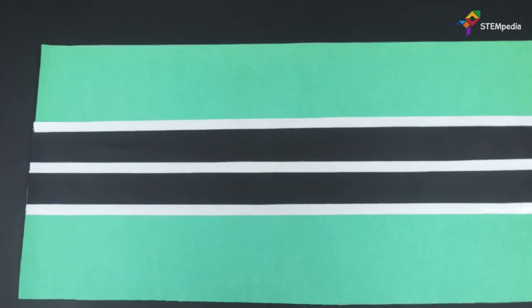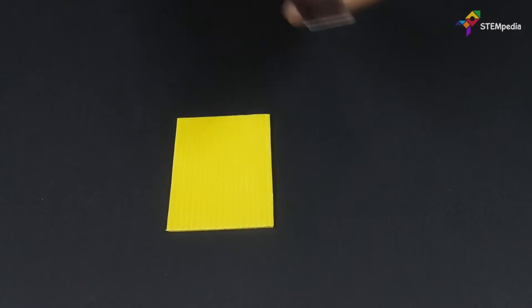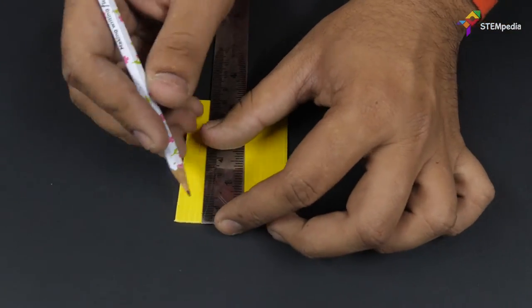Now, let's begin with the assembly of the toll booth. We will use two small pieces of size 8cm x 6cm of the corrugated sheet. Leaving 0.5cm from one side, draw a rectangle of 4 x 3.5cm.